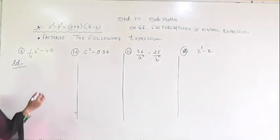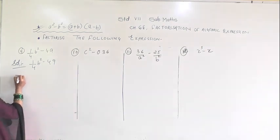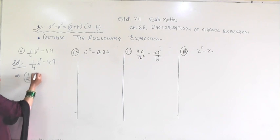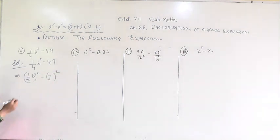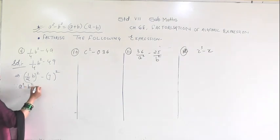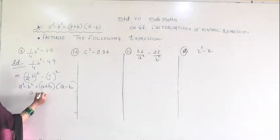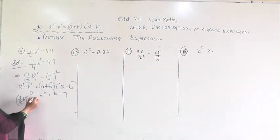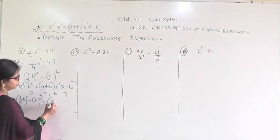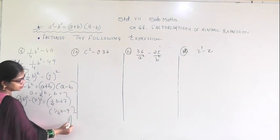Question 9: you are given (1/4)b squared minus 49. I can write 1/4 b squared as (1/2 b) squared, and 49 as 7 squared. Now this is in the form of a squared minus b squared, giving (a plus b)(a minus b), where a equals (1/2)b and b equals 7. Substituting, (1/2 b) squared minus 7 squared equals (1/2 b plus 7)(1/2 b minus 7).